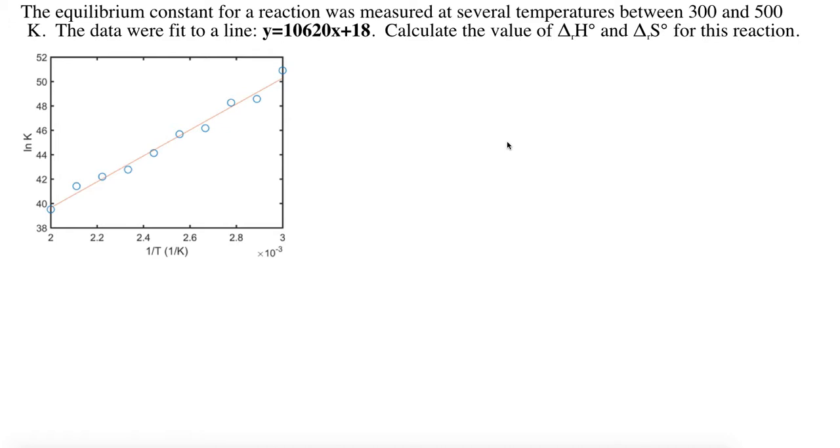In this video we're going to look at how we can extract the standard enthalpy change and standard entropy change for a reaction if we know how the equilibrium constant varies as a function of temperature. We have some data where the log of the equilibrium constant is graphed as a function of the reciprocal of the absolute temperature. That data were fit to a line, and we're going to see if we can use that to calculate delta H and delta S.